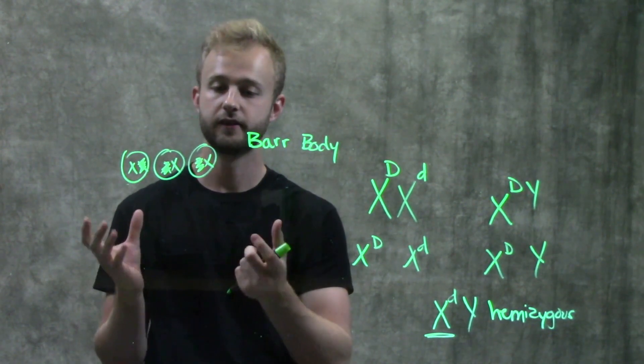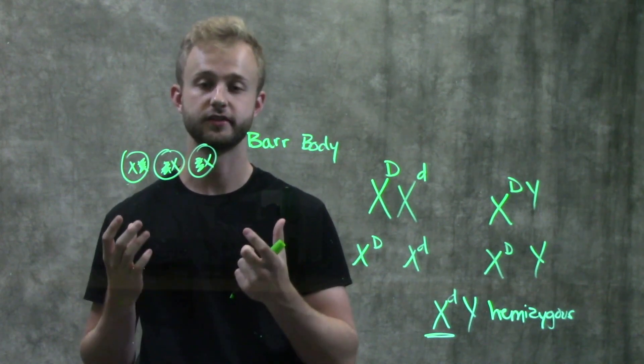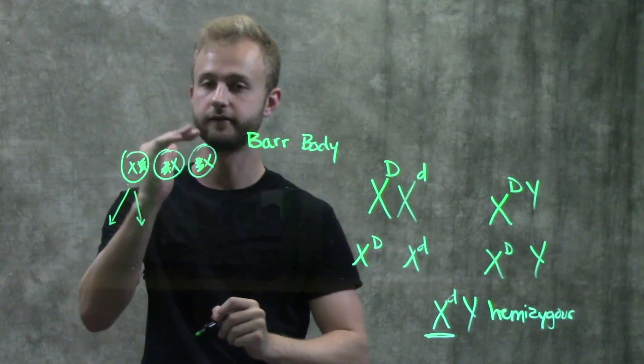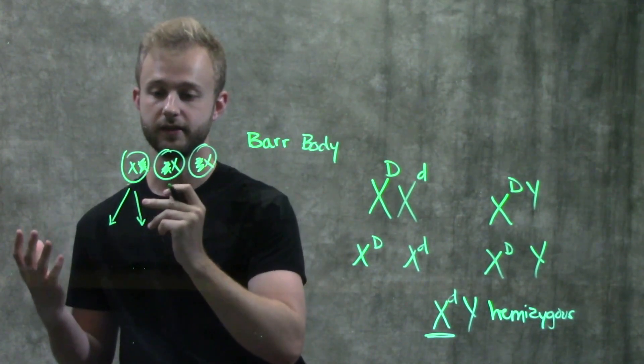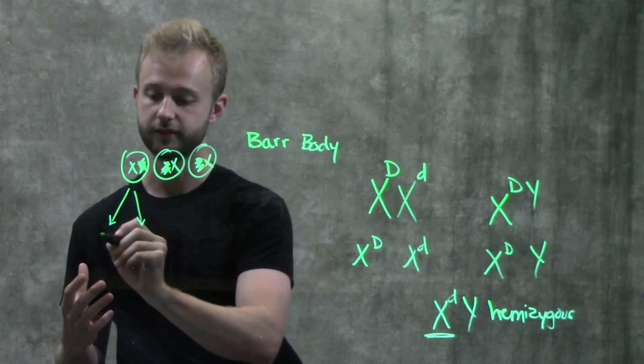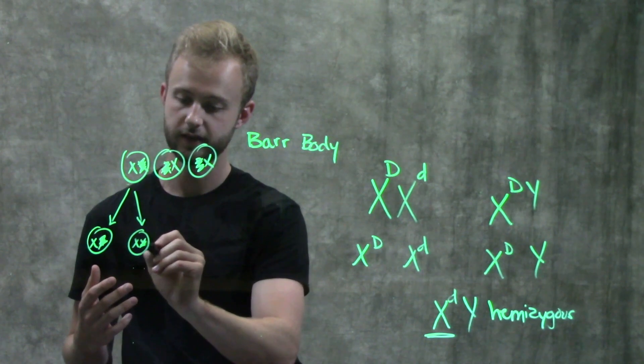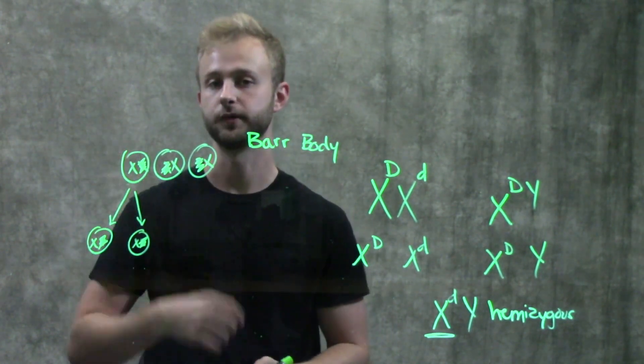So after we have this specific pattern of X inactivation set up, all of the daughter cells produced by mitosis of these cells are going to have the same X chromosome inactivated. So both of these, for example, would have this X chromosome inactivated because that's what happened in this first one.